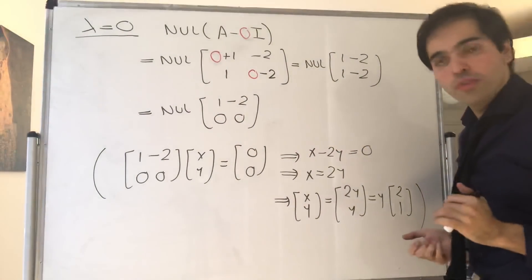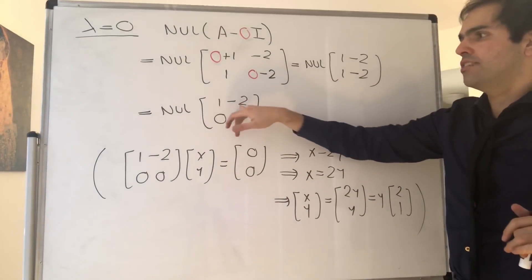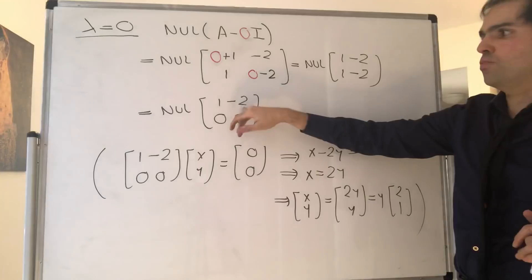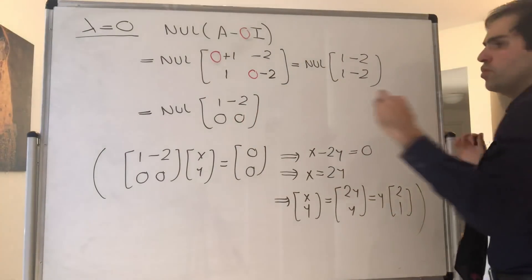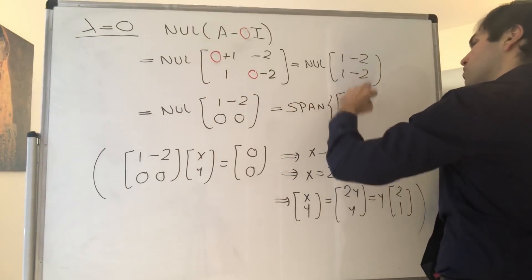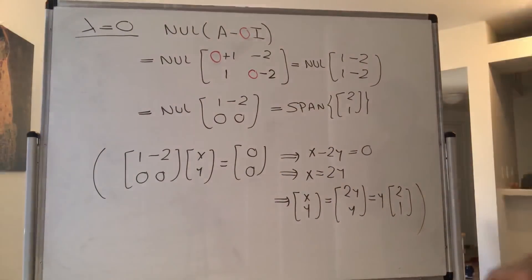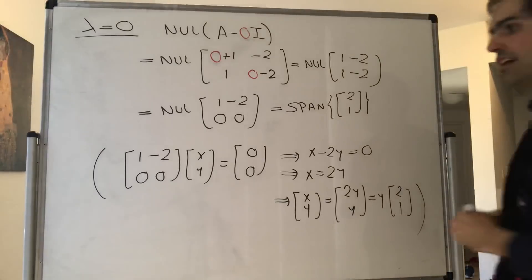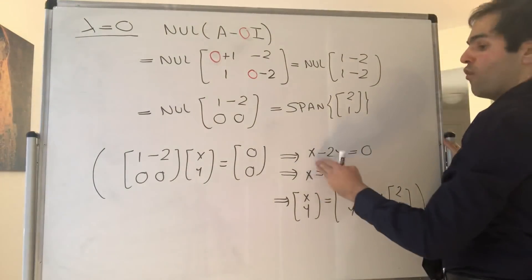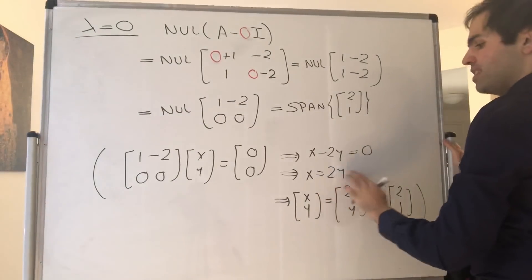And then there are two ways to proceed. Either you just find two easy numbers such that you get 0. In particular, notice 2 minus 1 times 2 is 0. So one way to say it's just the span of [2, 1], because 2 times 1 minus 2 times 1 gives you 0. Or there's a slow way where you just solve it directly, so you do matrix applied to [x, y] equals [0, 0]. And then you solve for x and y. So we get x minus 2y is 0, so x equals 2y.